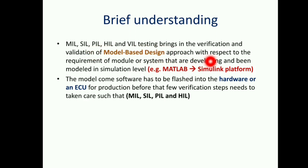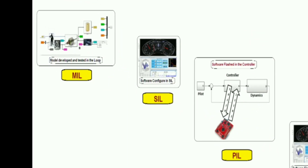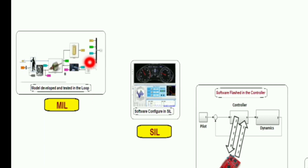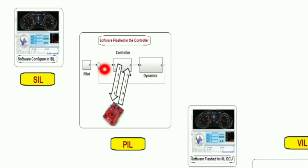For example, if the model has been developed in the MATLAB Simulink platform, the software has to be flashed into the hardware or an ECU for production after a few verification steps: MIL, SIL, then PIL and HIL. This is the complete flow. In this pictorial representation, we have MIL, then SIL — the software configuration for the SIL testing environment — then PIL, which is the software flashed in the controller. The name is Processor in the Loop, and in that tutorial we'll explain how Controller in the Loop converts to Processor in the Loop.